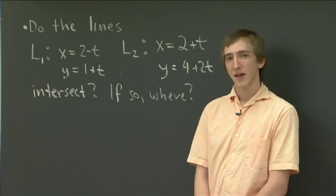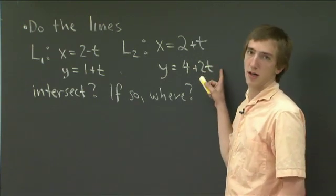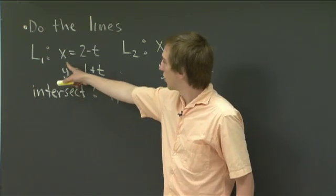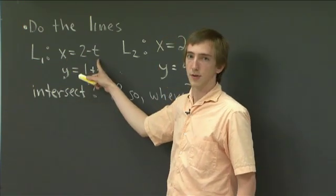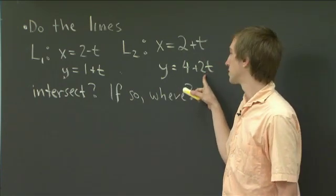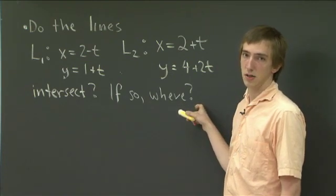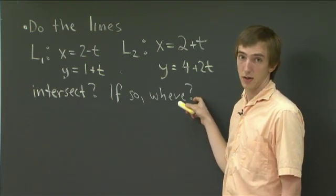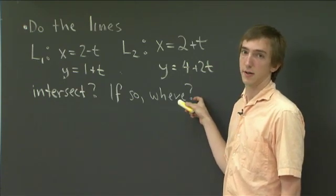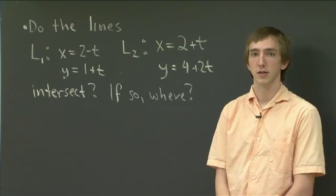Hello, and welcome back to recitation. The problem I'd like to work with you today is the intersection of two parametrized lines. We have two lines here: L1 given with the parametrization in terms of the variable t, and L2 also given with the parametrization in terms of the variable t. The first question is: do these lines intersect? And if so, where do they intersect? Why don't you pause the video and work on this, and we can check back in a moment and see how I solved it.